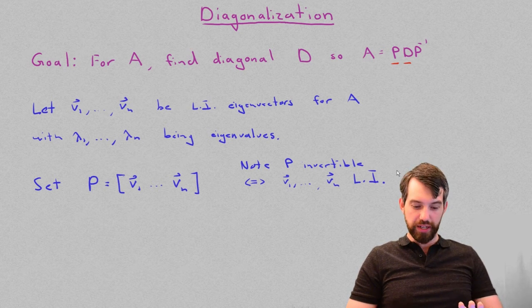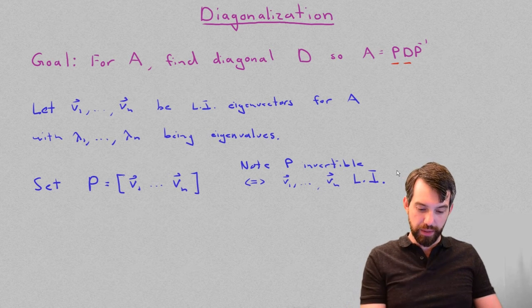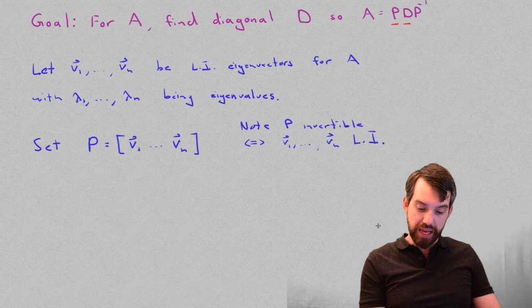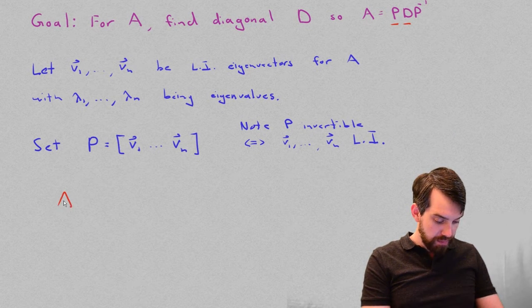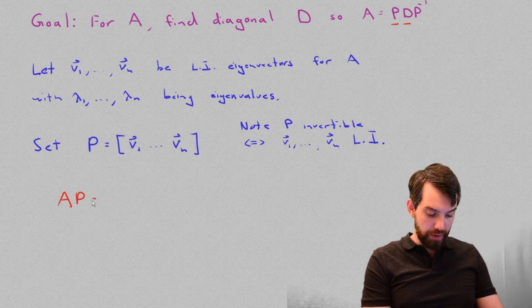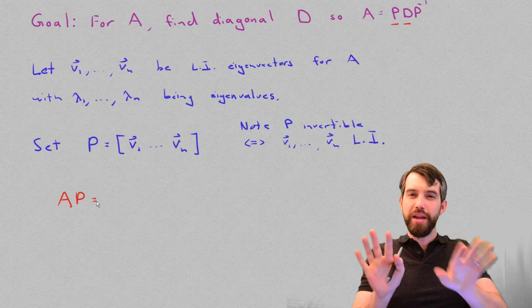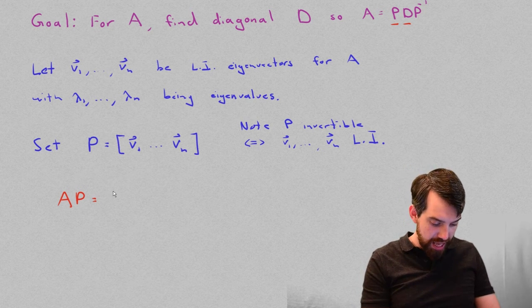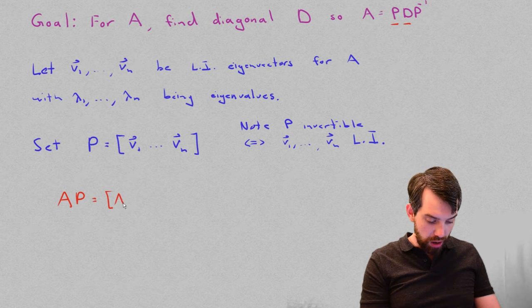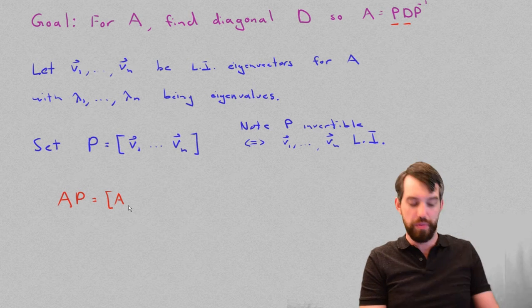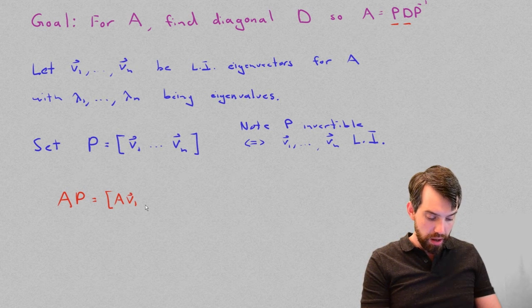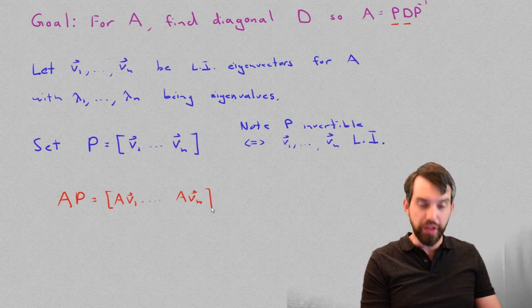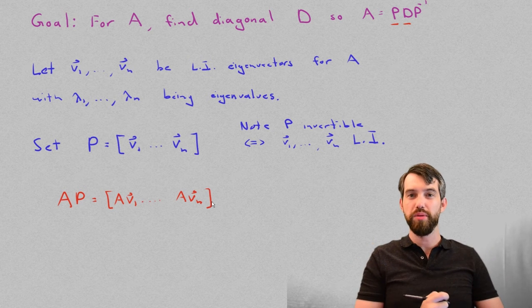So, before we get to the diagonal matrix, let me do part of this manipulation. Let me come and try and compute what A times P is going to be. So, I've got my matrix A and I'm multiplying it by whatever P is. And then we know how matrix times matrix multiplication works. This is the same thing as the matrix whose first column is going to be A whatever the first column of P is. So, A times v1 all the way down to A times vn. Indeed, this was the definition of matrix matrix multiplication.